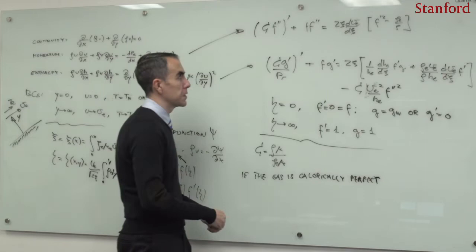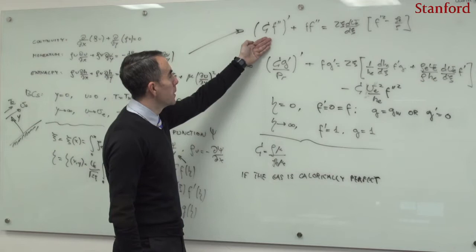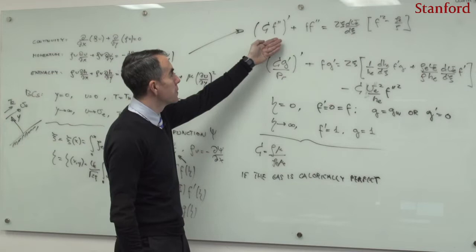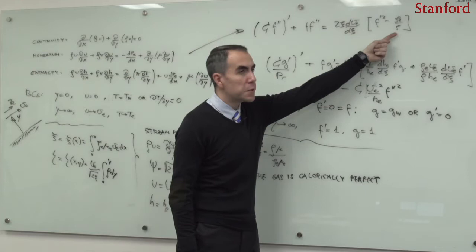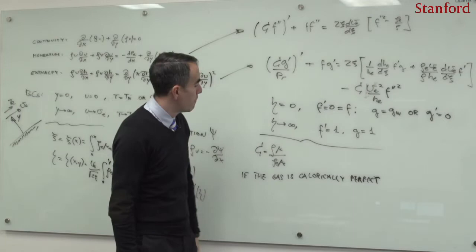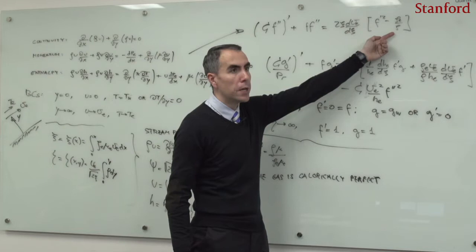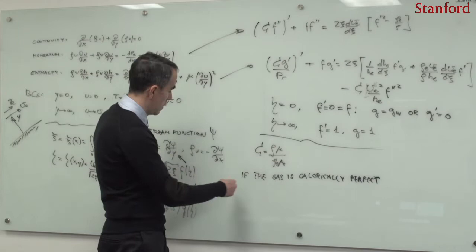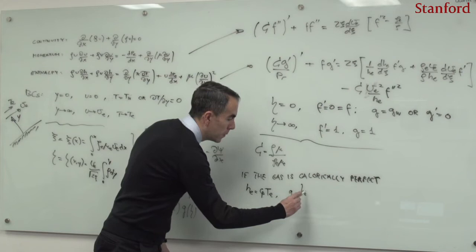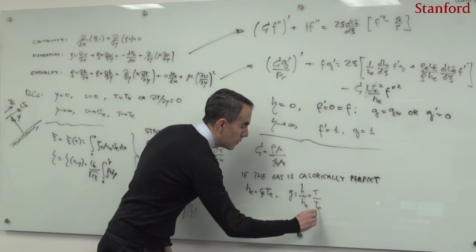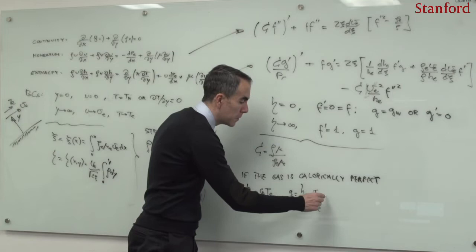Looking at the momentum equation: the first term is the divergence of the viscous shear stress; the second term is the wall-normal convection; the term multiplying f'^2 is the streamwise convection; and the last term is the streamwise pressure gradient. If the gas is calorically perfect, I can transform the density ratio directly into G, because the enthalpy is just Cp*T_e. As a result, G is not only the dimensionless enthalpy but also the dimensionless temperature, and by the equation of state, the inverse of the dimensionless density.